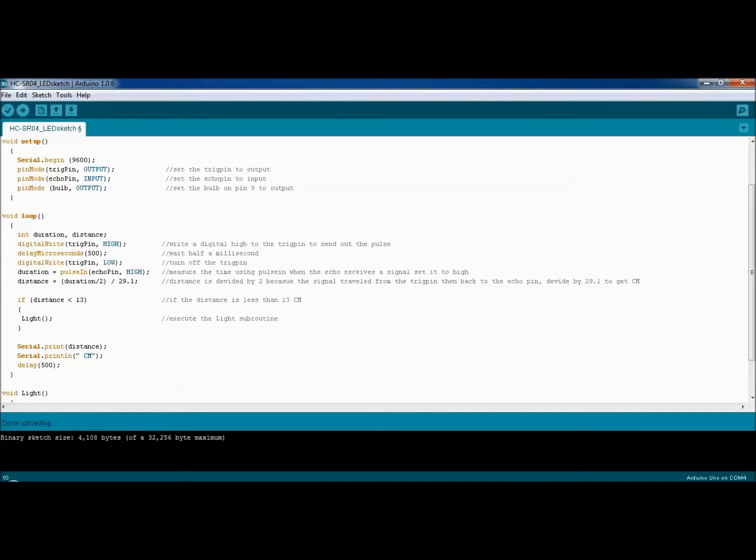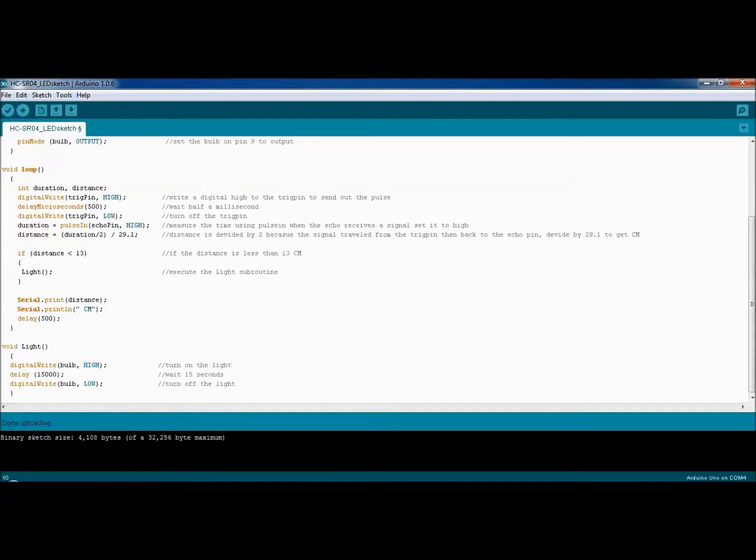The magic happens in the void loop. We start by setting up two integers: duration and distance. That pulse that comes out from the trigger pin and is received by the echo pin, we need to transform that information into actual centimeters.